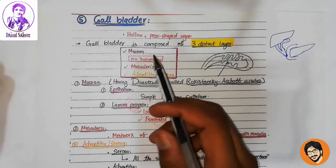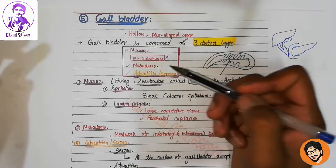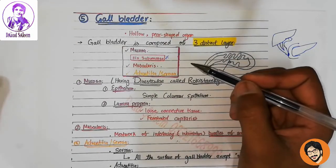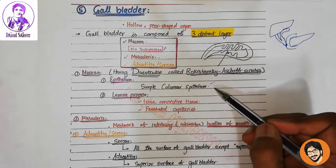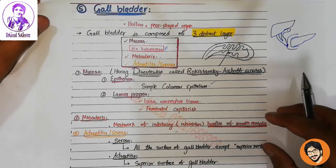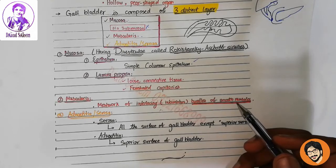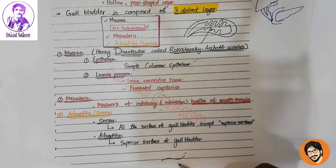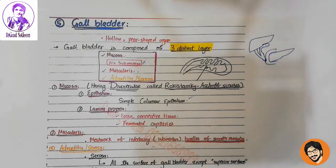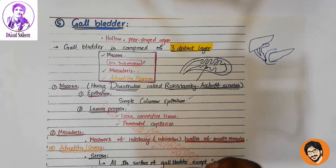Now the gallbladder is composed of 3 distinct layers: mucosa, muscularis, and serosa/adventitia. The mucosa consists of simple columnar epithelium, fenestrated capillaries, and loose connective tissue forming the lamina propria. The muscularis is a meshwork of intermingling bundles of smooth muscle. Then there is the serosa and adventitia — the adventitia covers the superior surface of the gallbladder, on top of the peritoneum, while the serosa covers the remaining surface.